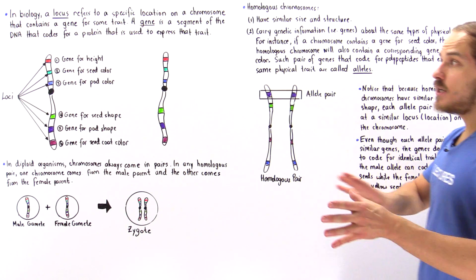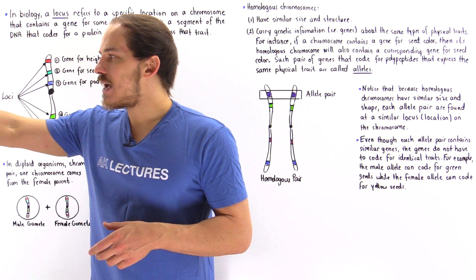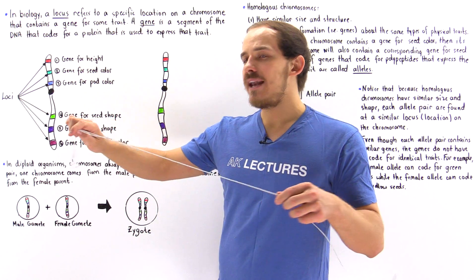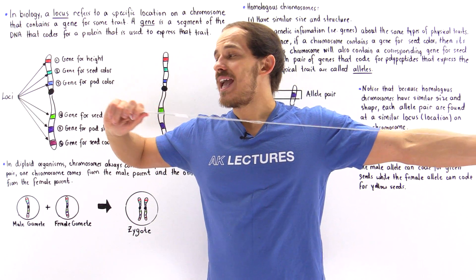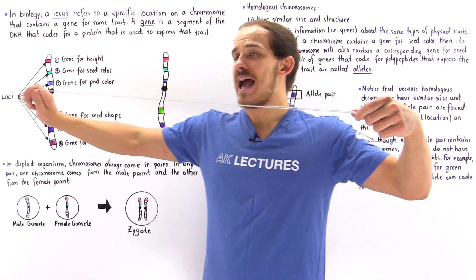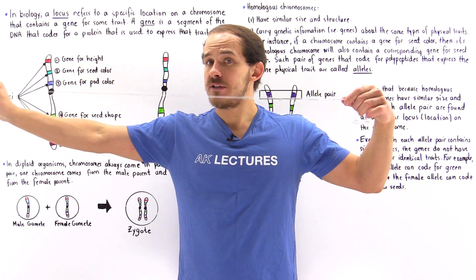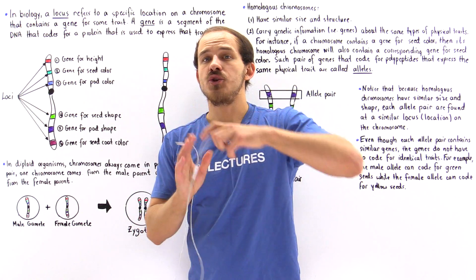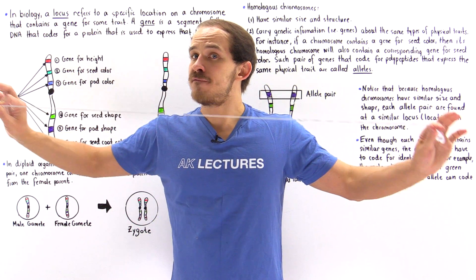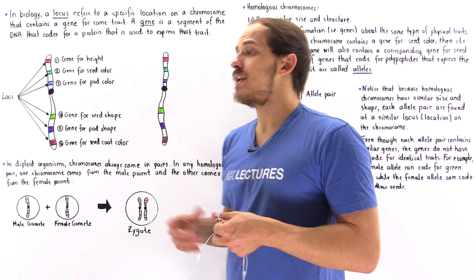Before we discuss the difference between these three words and how they're related, let's recall what a chromosome is. Inside the nuclei of cells of different organisms, we have DNA molecules. If we take any single DNA molecule and stretch it out, it will actually be quite long — in humans, somewhere between five and six feet in length.